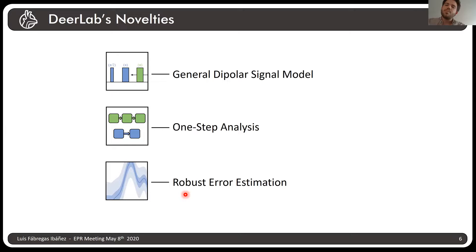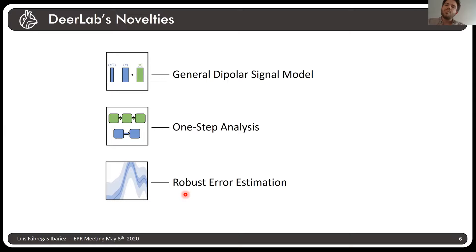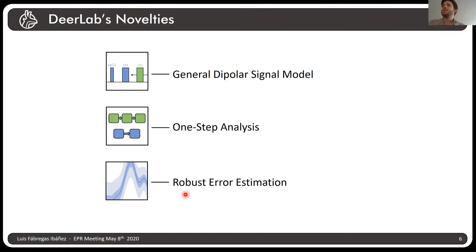For the rest of the talk, I want to focus on three important novelties of DearLab. The first is how we think about dipolar signals in DearLab — we moved towards a general dipolar signal model. The second is a new type of workflow introduced in DearLab called the one-step analysis. And third, I'll briefly mention how error estimation in DearLab works, which is a very important subject in dipolar spectroscopy.